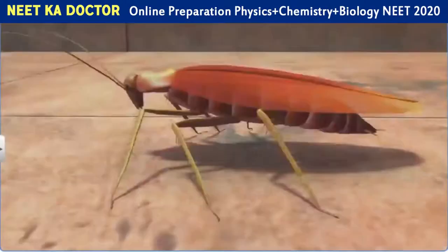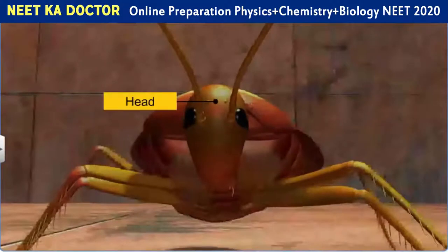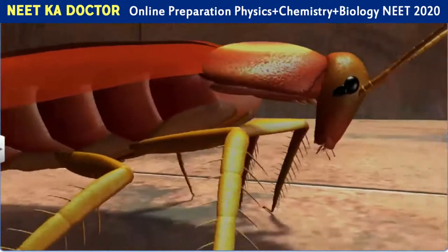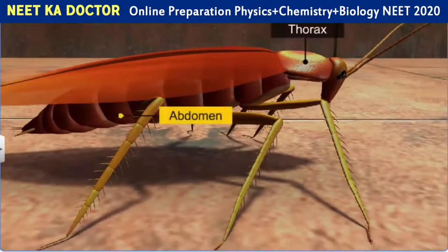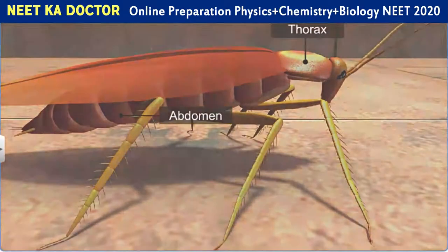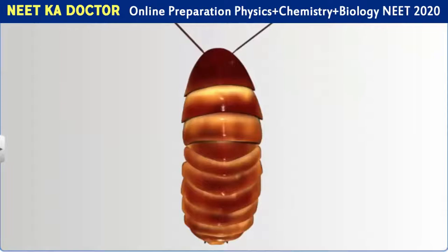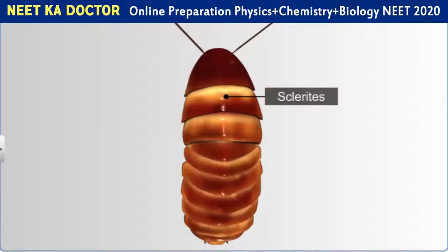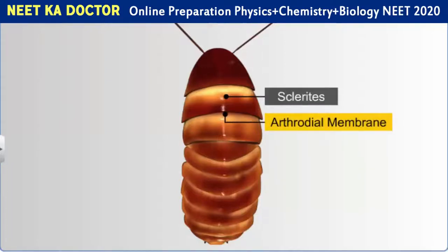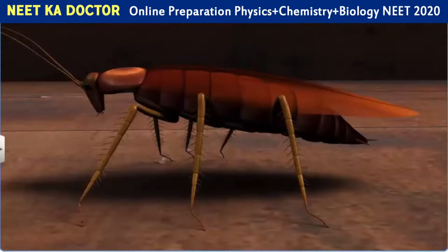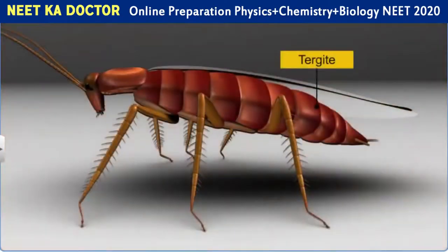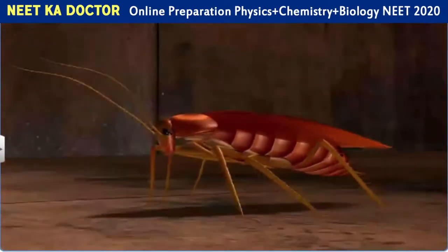The entire body is segmented and divisible into the head, thorax and abdomen. In each segment, the exoskeleton has hardened plates called sclerites, which are joined to each other by a thin, flexible articular membrane called the arthrodial membrane. The sclerites on the dorsal side are called tergites and on the ventral side they are called sternites.